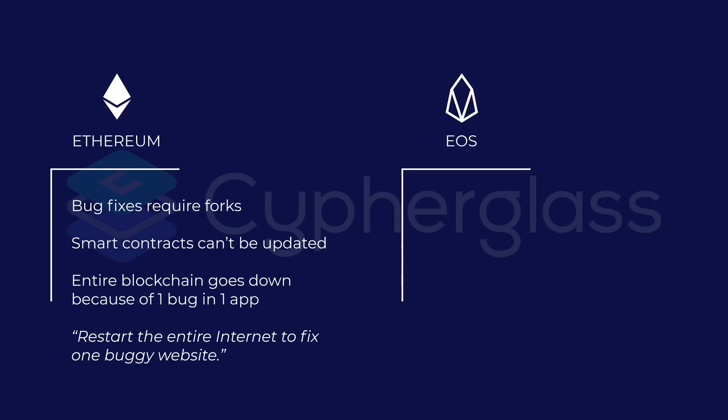When a bug is found in the core EOSIO code, the block producers can easily and quickly address it, as they have done for these handful of bugs. We've worked alongside the other top 21 block producers in fixing a lot of these bugs and making sure that the EOS mainnet stays online the entire time. Updating the core EOSIO code is relatively seamless on EOS and allows you to fix bugs without affecting the entire network.